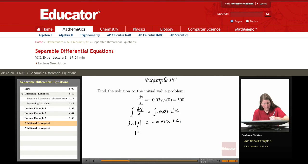Exponentiating I get absolute value of y equals e to the negative 0.03x plus c1. Remember that that plus c1 is in the exponent. We get absolute value of y equals e to the c1 e to the negative 0.03x.